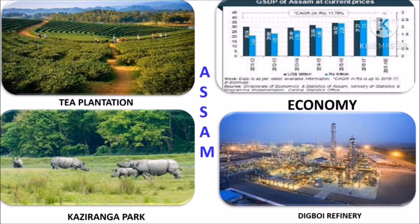Agriculture and Allied Sectors: Assam has been an agrarian economy since time immemorial. Agriculture is a major contributor to the state's economy and provides livelihood to a significant proportion of the population. The agro-climatic conditions support cultivation of a wide range of horticultural crops, including plantation crops and various fruits and vegetables, flowers, spices, medicinal and aromatic plants, nut crops and tuber crops. Pineapple, banana, cauliflower, broccoli, rose, rice, papaya, sugarcane, turmeric, potato and bougainvillea are among the high-yielding varieties of horticulture crops in Assam.